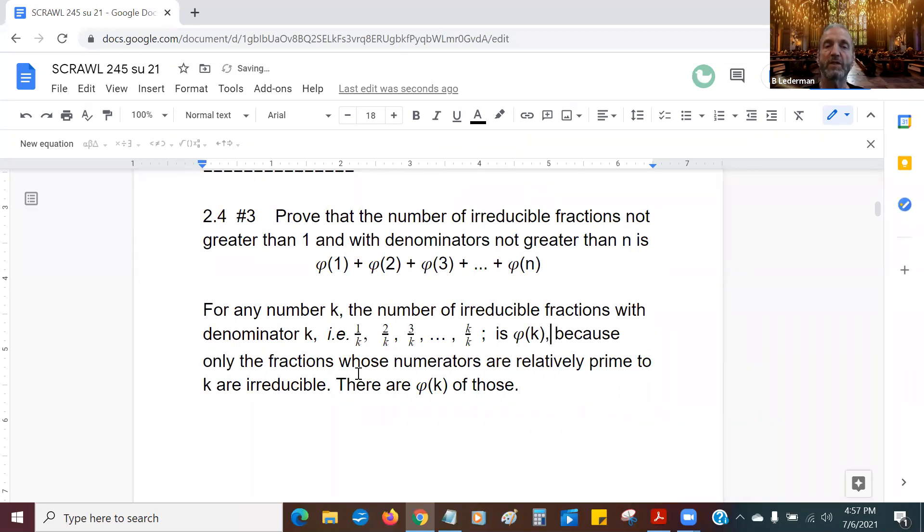Because only the fractions whose numerators are relatively prime to k are irreducible. If the numerator has a factor in common with k, the fraction is reducible. If it doesn't, you won't be able to reduce it. So it's only the fractions whose numerators are relatively prime to k. How many of those are there? There are φ(k) of those.